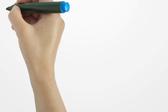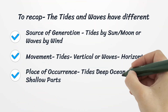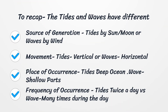To recap: tides and waves have different sources of generation — tides by sun and moon, waves by wind. Movement: tides vertical, waves horizontal. Place of occurrence: tides in the deep ocean, waves in shallow parts. Frequency: tides twice a day, waves many times during the day.